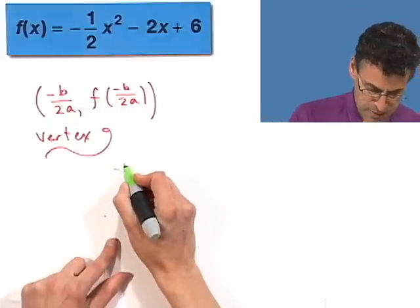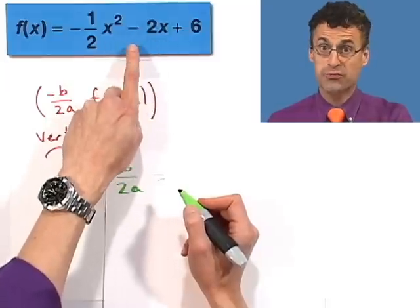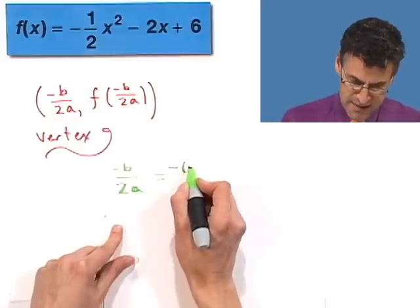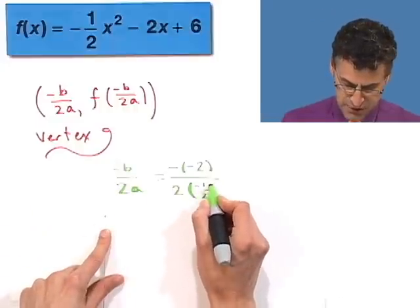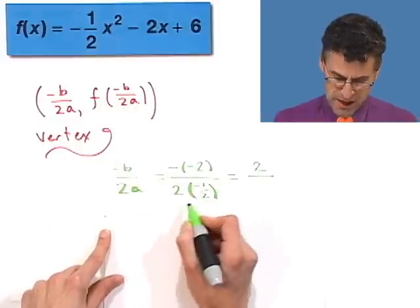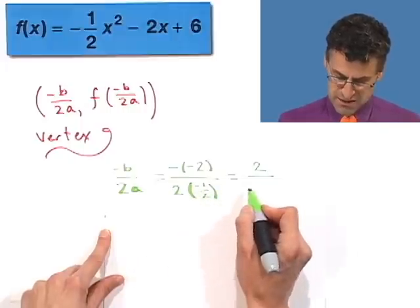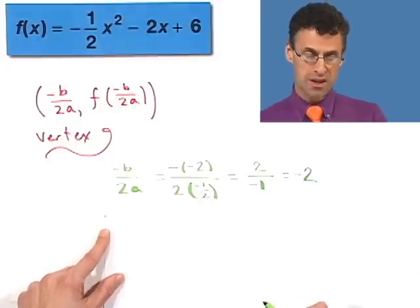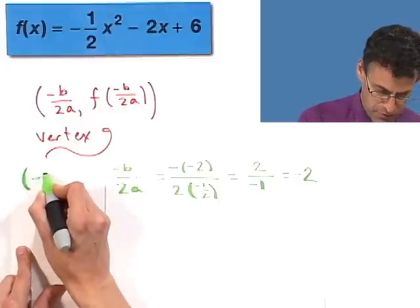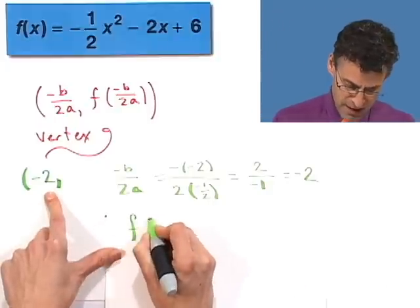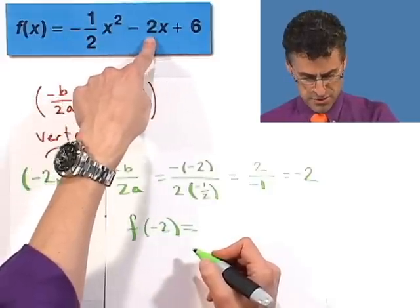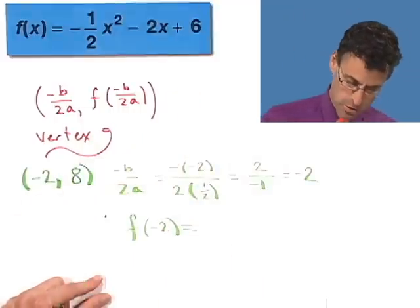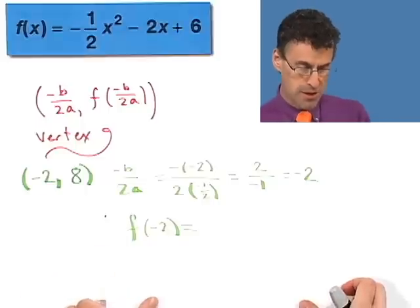Applying the formula to our example: negative b over 2a. Negative b is negative the coefficient in front of x, which is negative negative 2. All over 2 times a, where the coefficient in front of x squared is negative one-half. Negative times a negative is positive 2, and 2 times negative one-half gives negative 1, so the answer is negative 2 over 1, which is negative 2. The vertex x-coordinate is negative 2. Plugging in: negative 2 squared is 4, times negative one-half, minus 2 times negative 2, plus 6 gives 8. The vertex is at negative 2, 8.